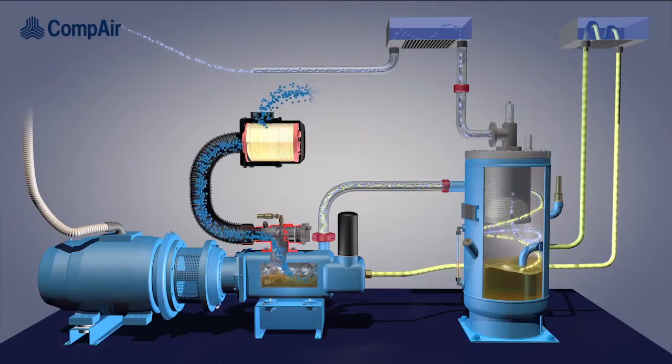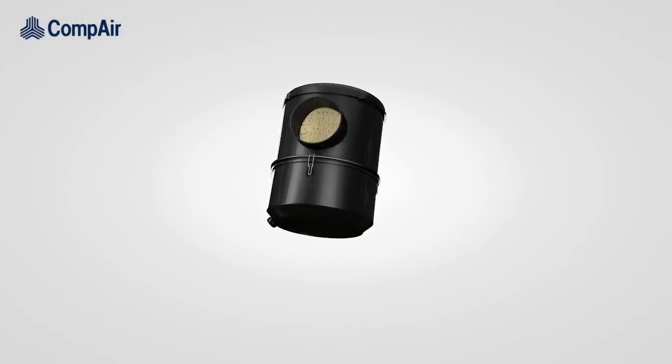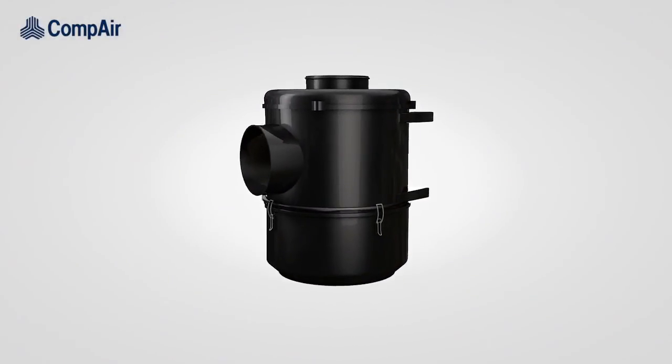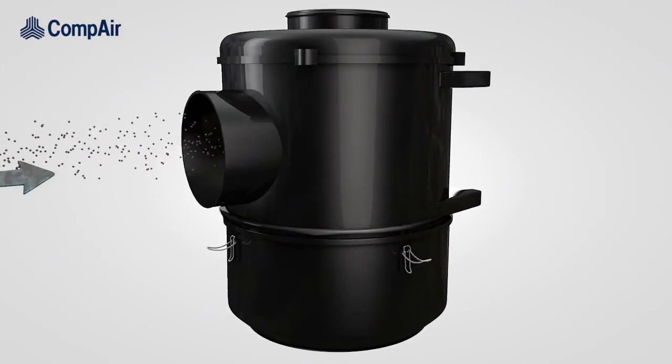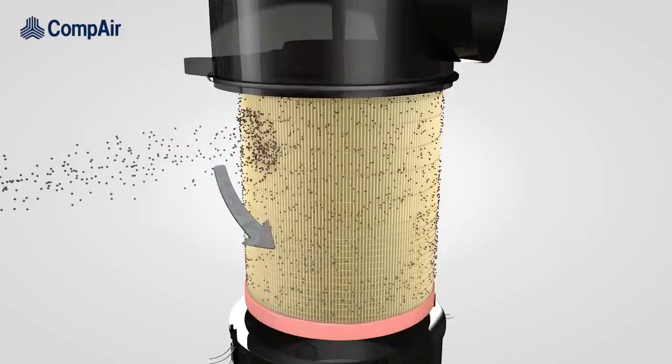So let's look at the first element of this system, the air filter. The air filter prevents dirt and dust particles from entering the compressor, protecting the screw and bearings against undue wear.